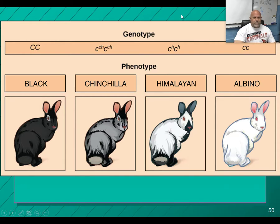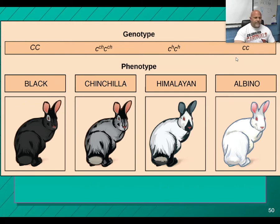Blood typing is not the only multiple allele trait. We can see a multiple allele situation in domesticated rabbits where you have four different alleles: the black gene, the chinchilla gene, the Himalayan gene, and the albino gene. How these combine with one another determines the appearance of the rabbit. Each individual rabbit only has two alleles, but there are four different alleles in the population, and how those combine determines your color.